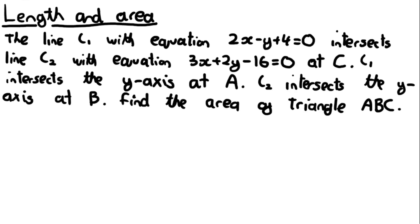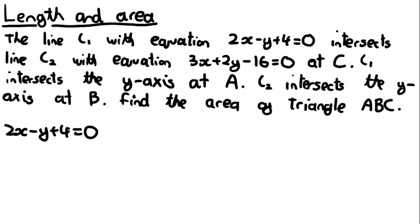A very common exam question gives you two lines that intersect at a point called C, where one line intersects the y-axis at point A and the other intersects the y-axis at point B, and they want you to find the area of triangle ABC. First, find the actual points. Starting with C, I'll use elimination — making both x-coefficients equal to 6 by multiplying the first equation by 3 and the second by 2.